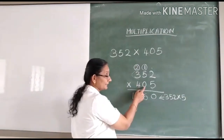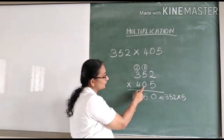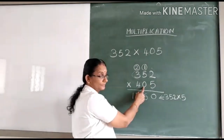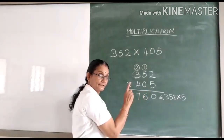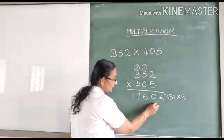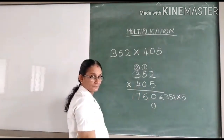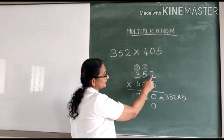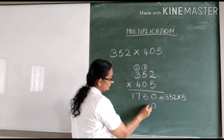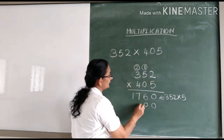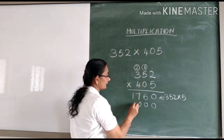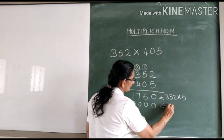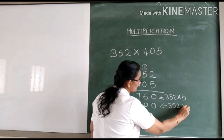We have to multiply with the digit in the tens place. What is the digit in the tens place? Zero. When you are multiplying a number with a digit in the tens place, you have to place a zero here first. Now multiply zero with two — zero. Zero into five — zero. And zero into three — zero. That's the second step: three hundred and fifty-two into zero.